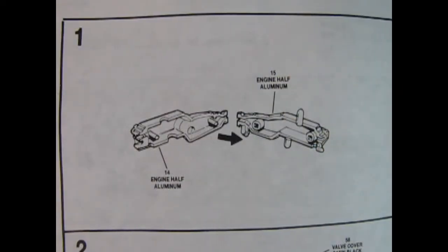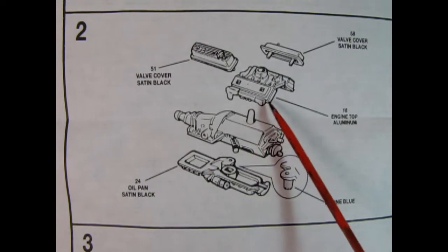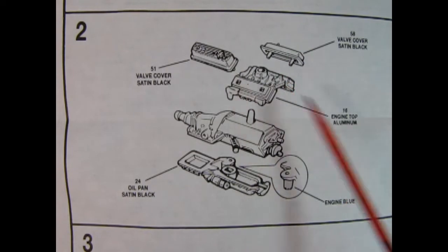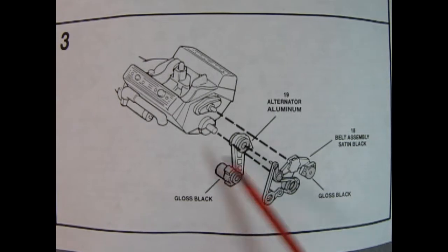So again, with the Revell Monogram instruction sheets, we get a lot of pictures, but not too much going on. They could have done this in one image like the old Johan ones, but whatever. So here we have our right and left hand side engine half with the transmission for step number one. In step number two, we can see the top of the engine being glued on. So this is our cylinder heads and our intake manifold. Then we've got our valve covers up here and our oil pan going on down there. And it does say to paint the oil filter with the engine blue. Here we have panel three and we've got our alternator and the bracket going on here. And then we've got our belt assembly going in there, right onto the engine block. Fairly simplistic.